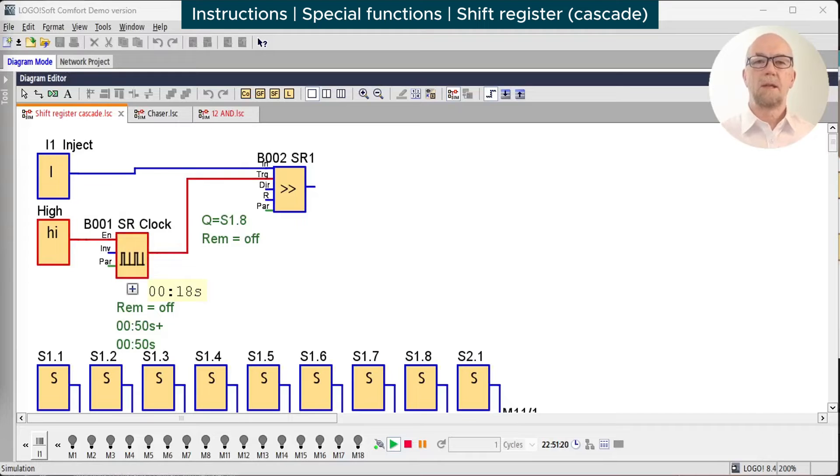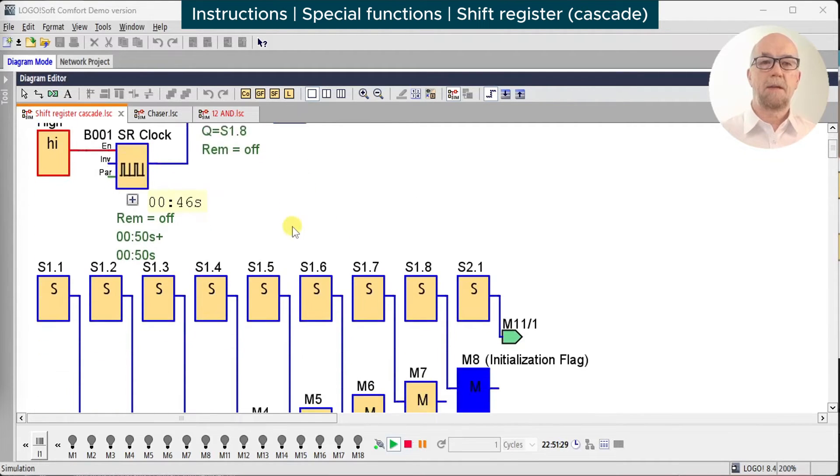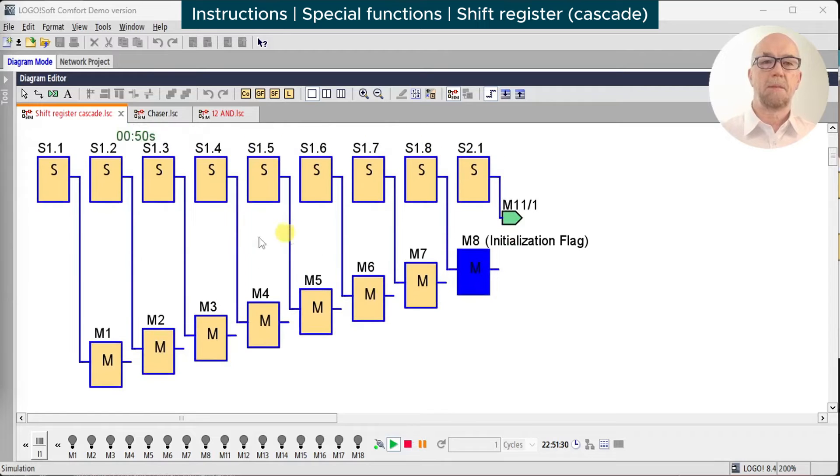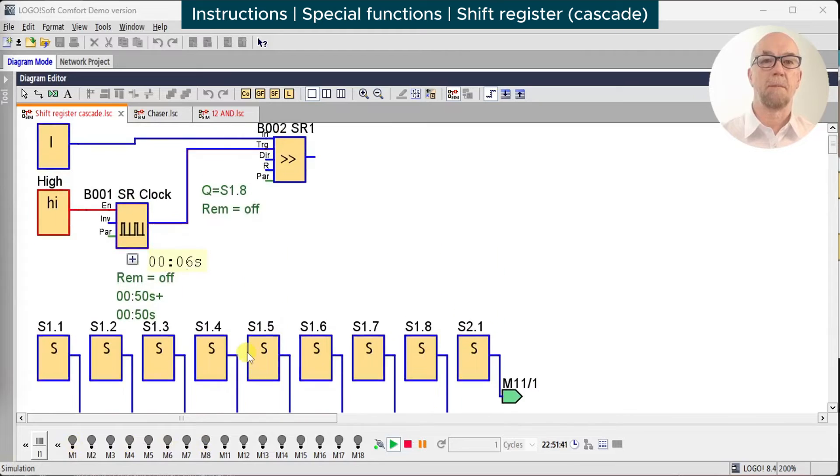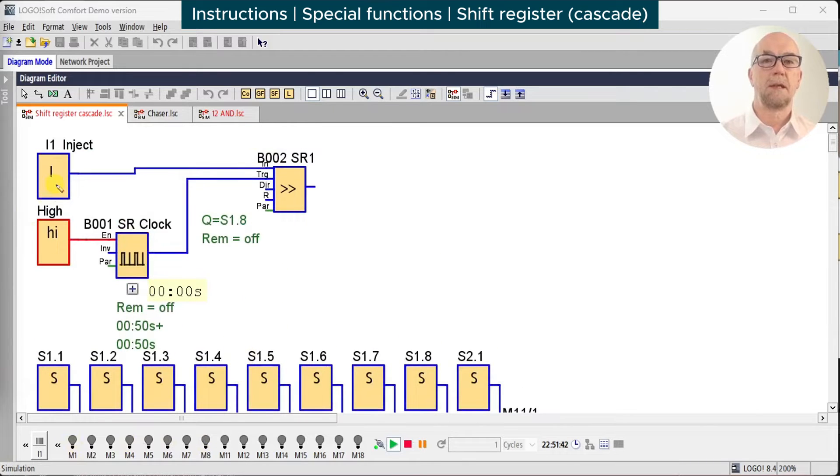Okay, so let's cascade a pair of shift registers. Here we'll start off with a single 8-bit shift register as before. I have set up down here some of the shift register output bits driving the M flags so we can see what's happening on the simulator status bar down at the bottom.